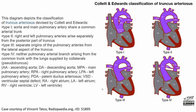This is the Collett and Edwards classification, which divides truncus arteriosus into four types. Type one: aorta and main pulmonary artery share a common arterial trunk. Type two: right and left pulmonary arteries arise separately from the posterior part of the truncus. Type three: separate origins from the lateral aspect of the truncus. Type four: neither pulmonary artery branch arises from the common trunk, with the lungs supplied by collateral vessels.